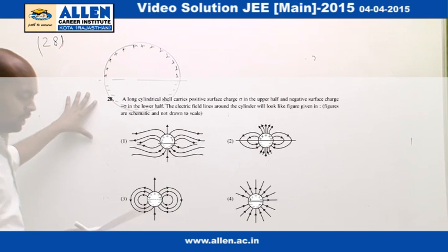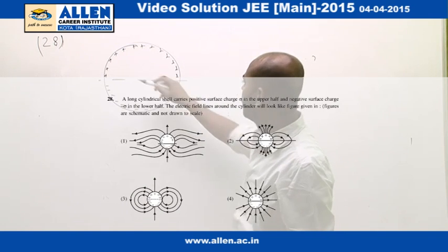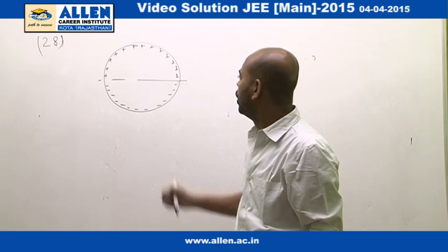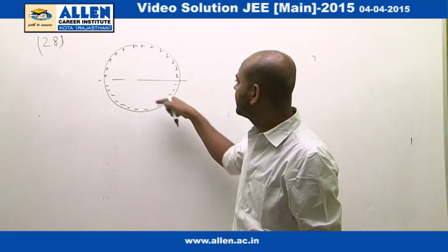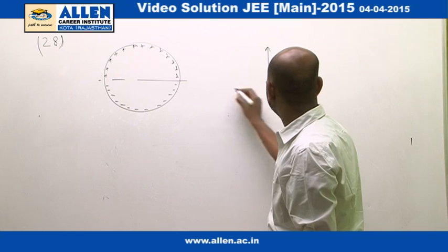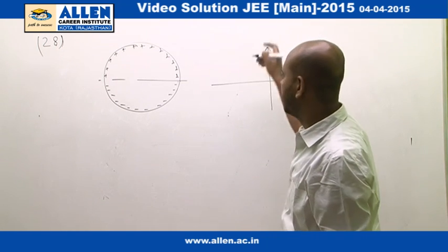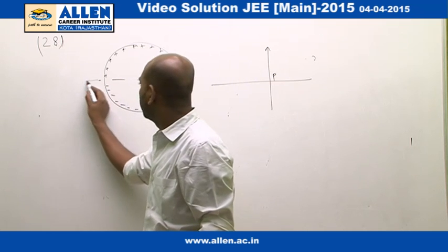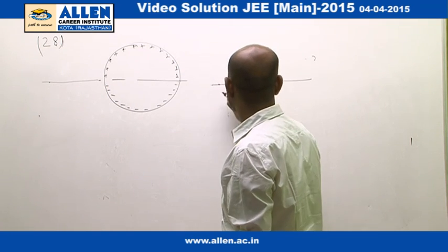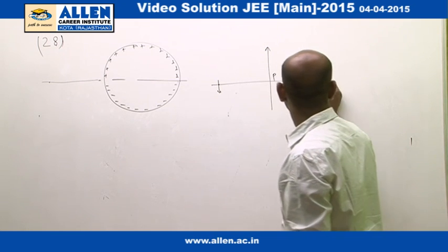In question number 28, we have a long cylinder with half part positively charged and half part negatively charged. Obviously, this cylinder can be treated as a dipole in this direction — the P vector goes from minus to plus. If you see the electric field at this point, as shown in the diagram, the electric field at this point will be in the downward direction.